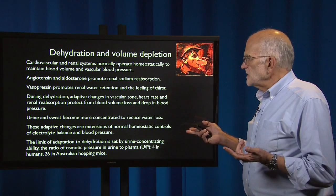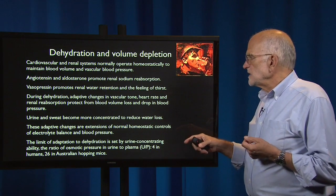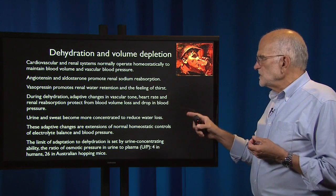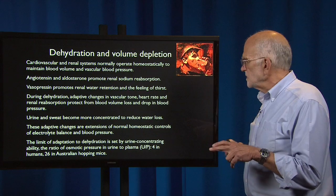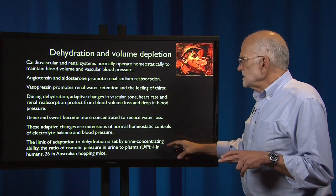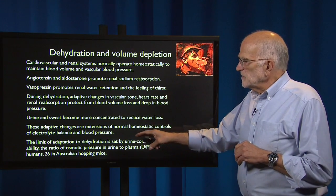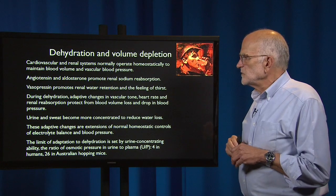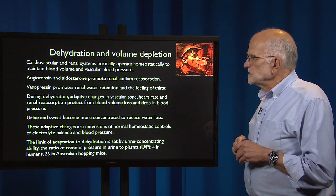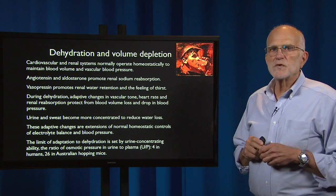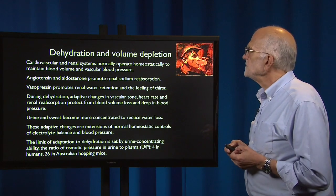The limit of adaptation to dehydration is set by the urine concentrating ability — the ratio of osmotic pressure in urine to plasma. It is about four in humans, but in Australian hopping mice it's 26. They can produce a urine which is approximately six times more concentrated than our most concentrated urine.